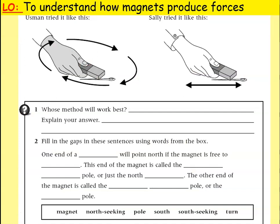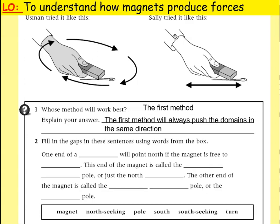Here's a quick activity: Usman and Sally are both trying to make a needle into a magnet. Question one: whose method works best? Usman's method works best. Sally keeps going back and forward, which won't align the domains — it switches them one way then the other. Usman's circular motion using the same pole all the time aligns the domains consistently, always pushing them in the same direction so the needle becomes a magnet.